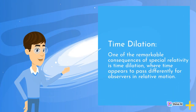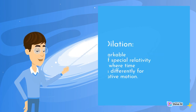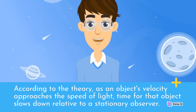Time Dilation: One of the remarkable consequences of special relativity is time dilation, where time appears to pass differently for observers in relative motion. According to the theory, as an object's velocity approaches the speed of light, time for that object slows down relative to a stationary observer.